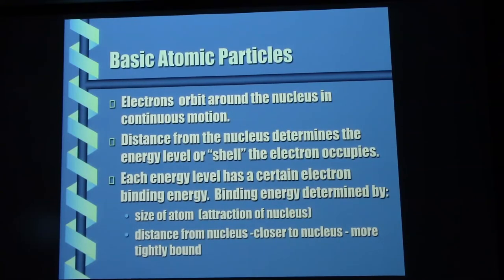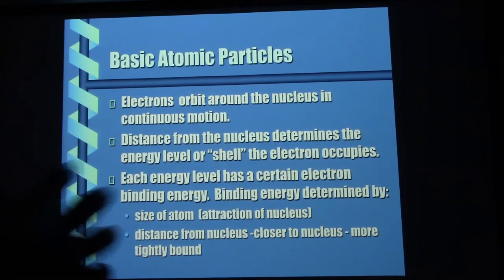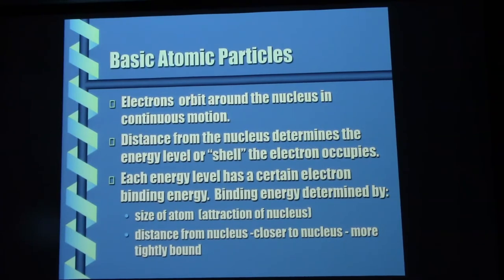Electrons orbit around the nucleus — they are in constant motion. They do not orbit like the planets do in a plane; they orbit in a shell. They move preposterously fast. So at the K shell, there are at most two electrons, but if you were to look at this thing under a super microscope, it would just look like a ball — because those electrons are moving so fast that they appear to occupy all points in space simultaneously. Which I think is pretty amazing.